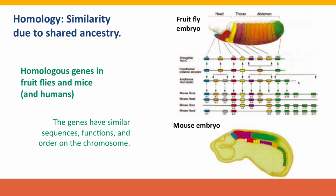Shared ancestry also applies to the genes that are responsible for the development of these features. Here we're comparing the genes that control embryonic development in a fruit fly and in a mouse. The genes are colored according to their function and positioned according to their arrangement on the chromosome. We see that the genes are similarly colored for similar parts of the embryo, and they're arranged similarly on the chromosomes. They also have similar sequences, and we now know that genes like this control embryonic development in all animals, and that these genes are similar because they are descended from a common ancestor of all animals that controlled its development with these genes.